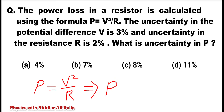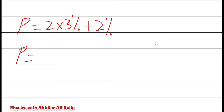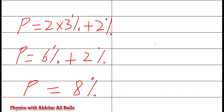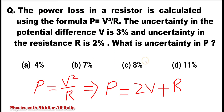To find the uncertainty in P, we use the uncertainty propagation formula: uncertainty in P = 2 × (uncertainty in V) + (uncertainty in R). Since V is 3% and R is 2%, uncertainty in P = 2 × 3% + 2% = 6% + 2% = 8%. So the uncertainty in P is 8%, and the correct option is C.